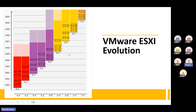The current versions are 6.7 and 7.0. One software has many versions. That is why we have Windows versions as an example: Windows XP, Windows 7, Windows 8, Windows 10, Windows 11.